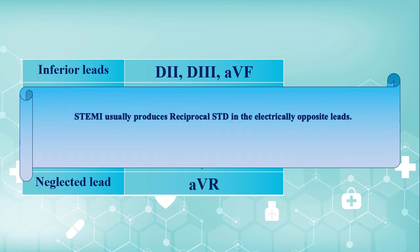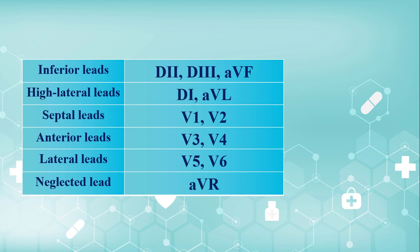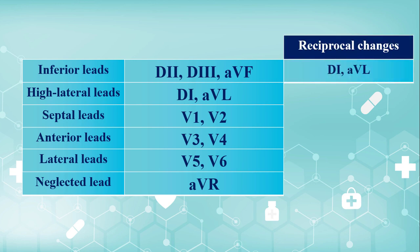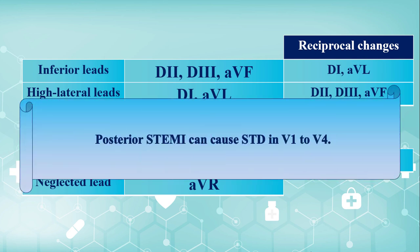ST elevation MI usually produces reciprocal ST depression in the electrically opposite leads. Reciprocal ST depression is highly in favor of ST elevation MI and excludes benign causes of ST elevation including early repolarization. Reciprocal EKG changes are well defined for lateral, inferior, and posterior ST elevation MI. Inferior ST elevation MI can be associated with reciprocal ST depressions in D1 and AVL, while lateral ST elevation MI can produce reciprocal ST depressions in inferior leads. Also remember that posterior MI can cause ST depressions in V1 to V4.